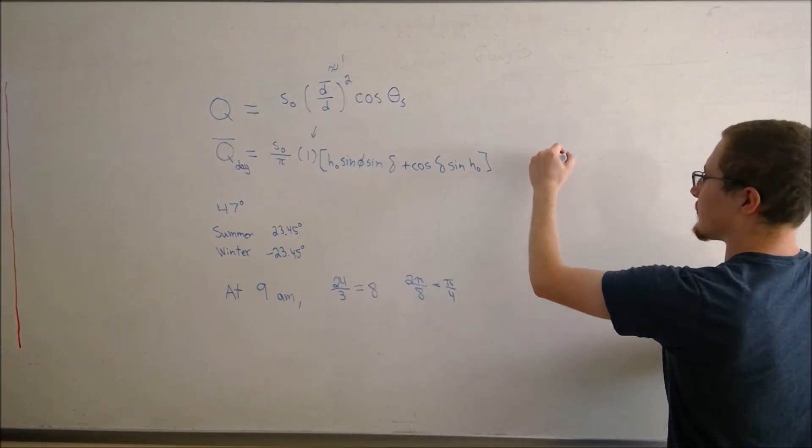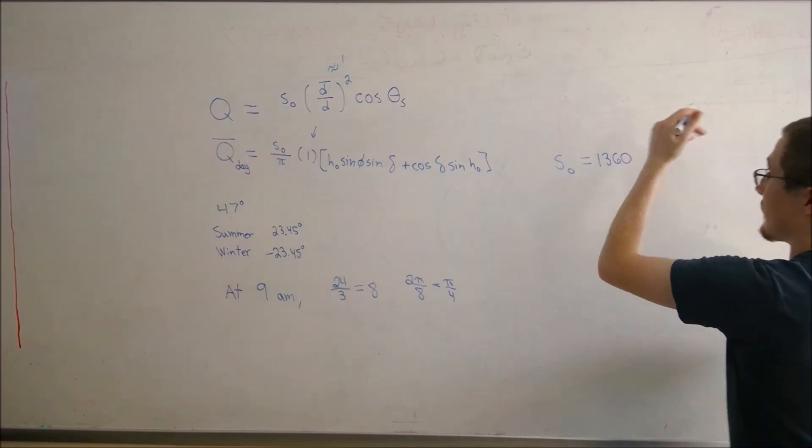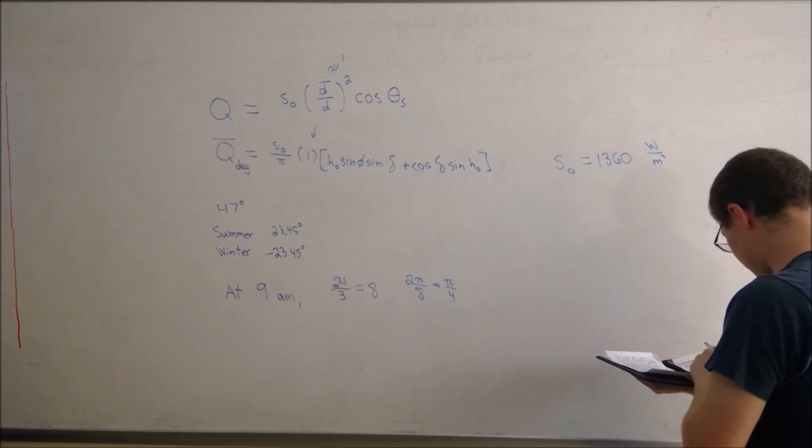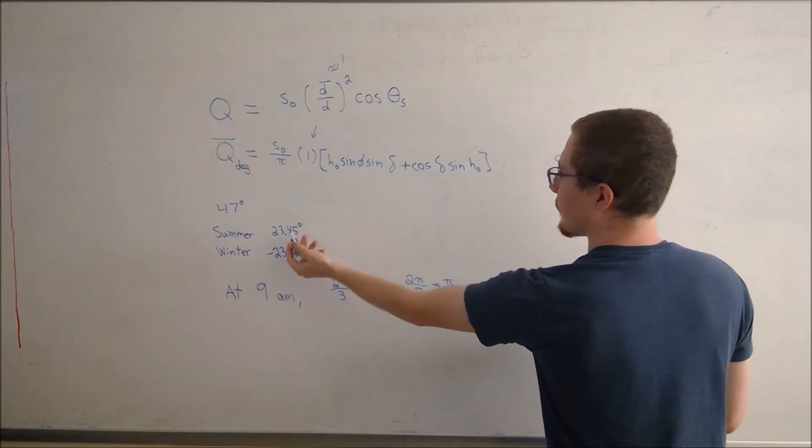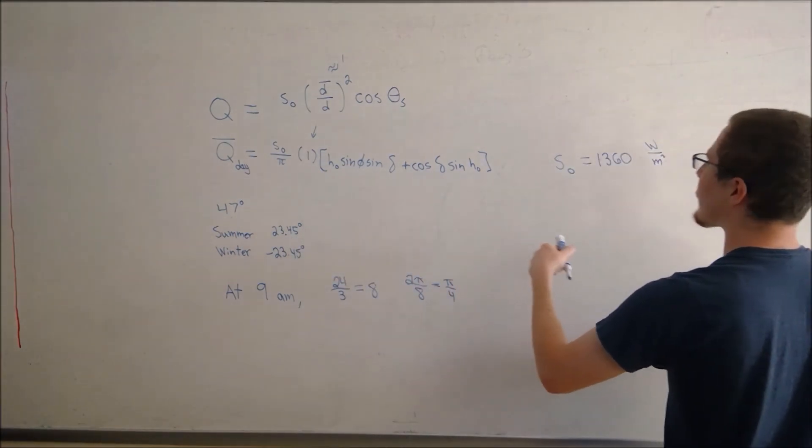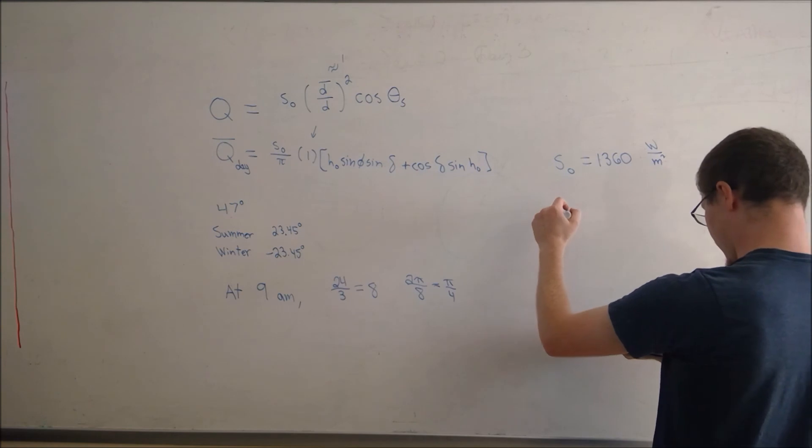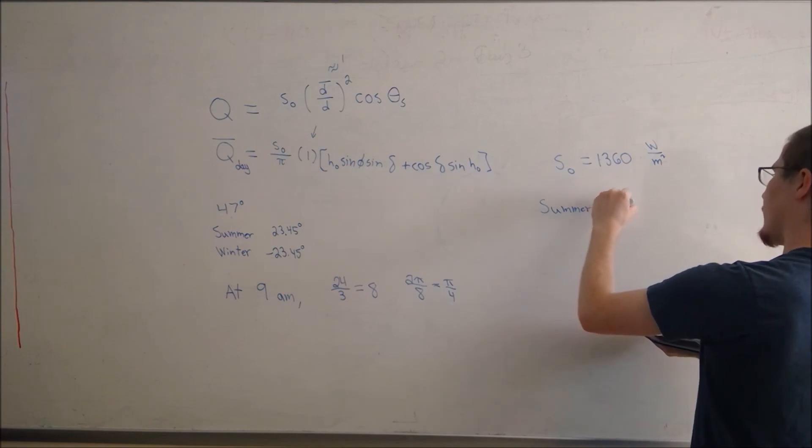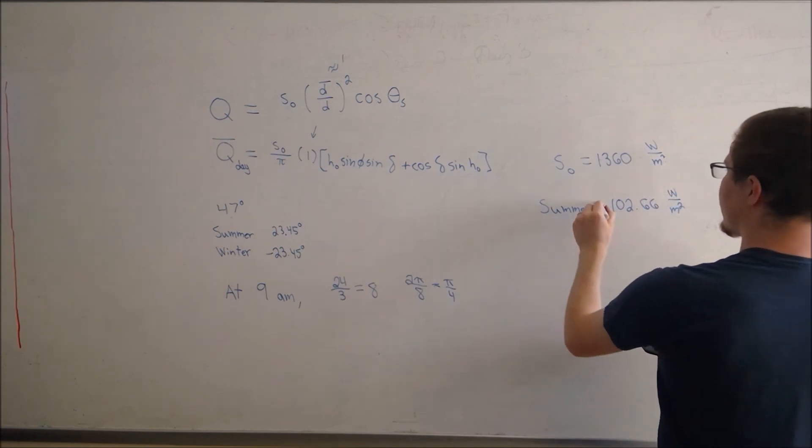So given that the initial solar radiation is about 1360 watts per meter squared, and our latitude of 47 degrees and our declination angle of 23.45 for summer and our hour angle of pi over 4, we come to an approximate value of solar radiation for summer being 102.66 watts per meter squared.